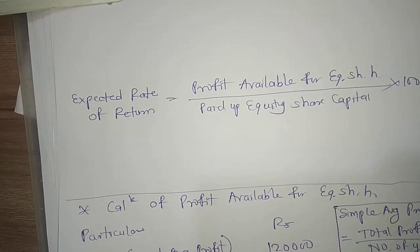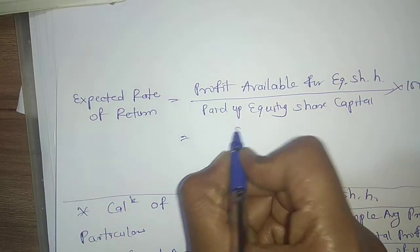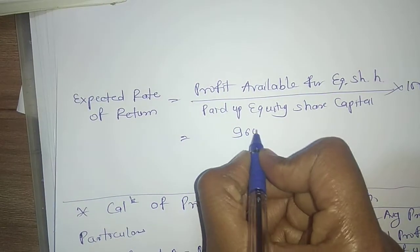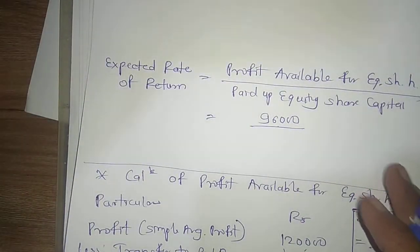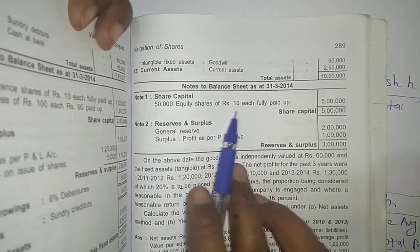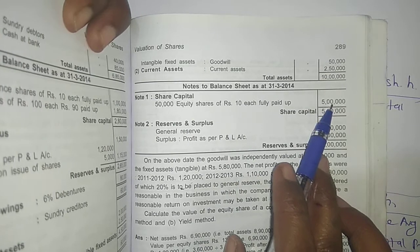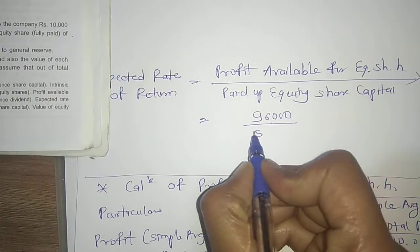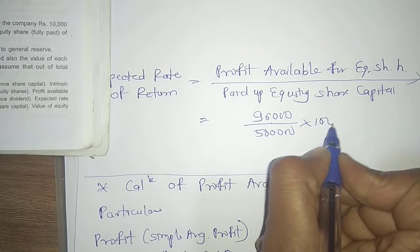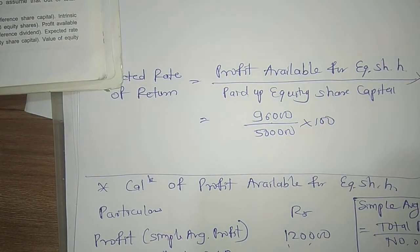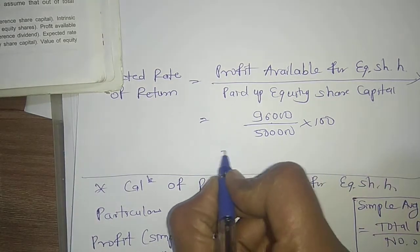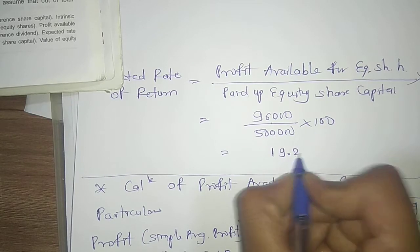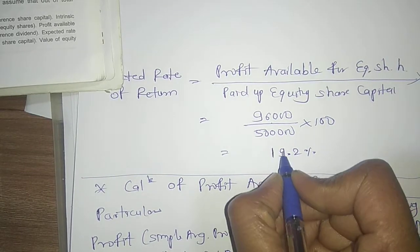We use this amount to calculate the value of a share. For expected rate of return: 96,000 divided by paid-up equity share capital of 5 lakh (50,000 equity shares of rupees 10 each, fully paid), multiplied by 100 gives 19.2%.